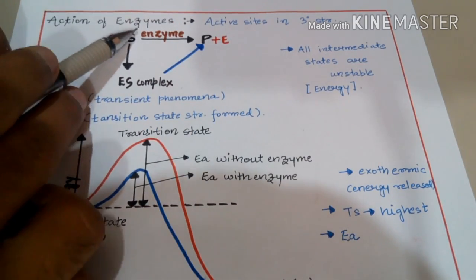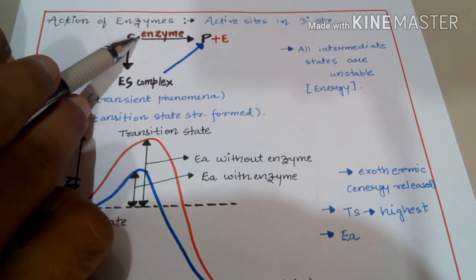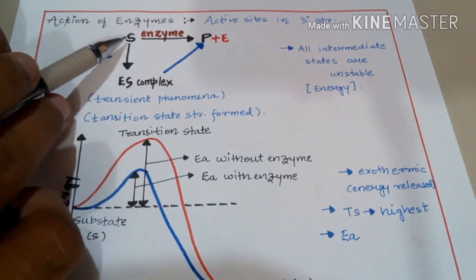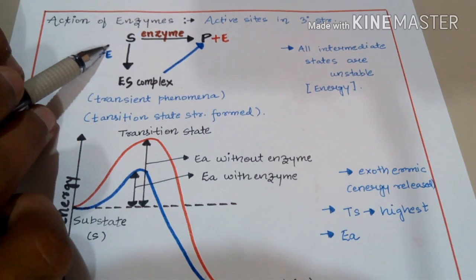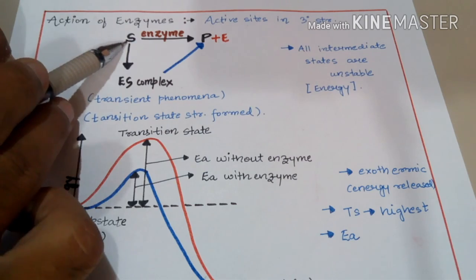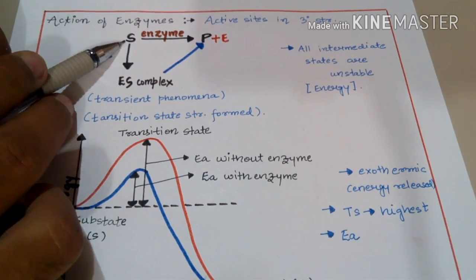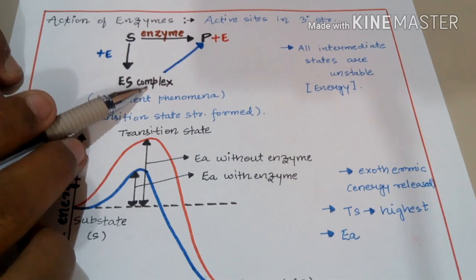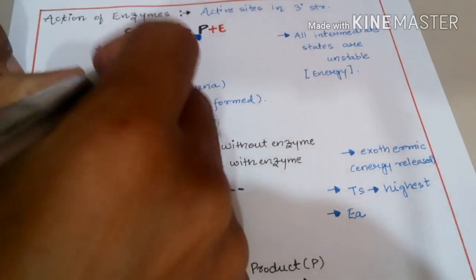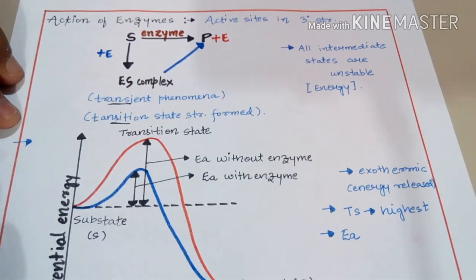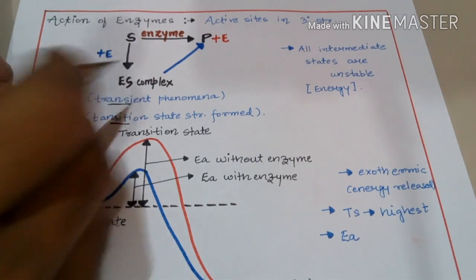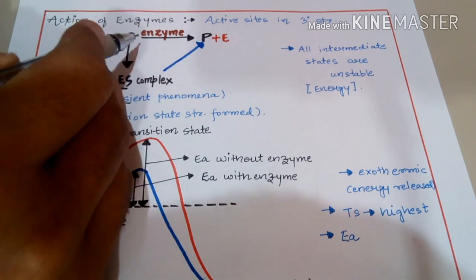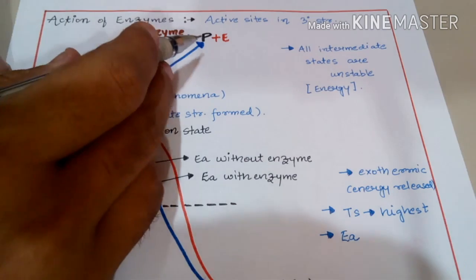A substrate that has to be converted into product — which is our reactant — is converted into product with the help of an enzyme. We can represent this sequentially: E represents enzyme, S represents substrate, and P represents product. The substrate binds to the active site of the enzyme to form an enzyme-substrate complex, which is an intermediate or transition state, because the substrate first converts into the enzyme-substrate complex and then into product.